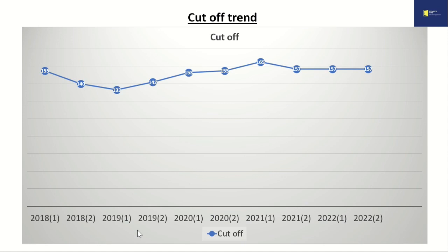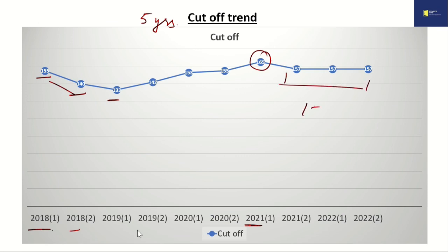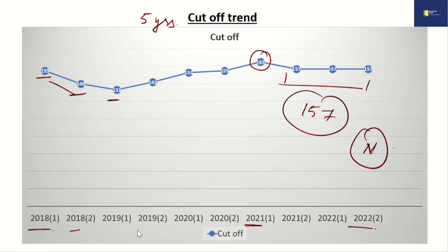Now let us see the cutoff trend of the last 5 years. The cutoff was 155 in 2018, fell to 140 in the second exam of 2018, then again fell to 133. But since then the cutoff has been rising, and the highest cutoff has been 165 in the year 2021. Looking at the last 3 papers, the cutoff has been constant at 157. In the second paper of 2022, normalization of marks was introduced, but it does not affect our preparation. We still need to work hard and get somewhere around 200 marks — we have to be on a safer side.